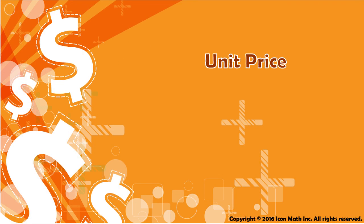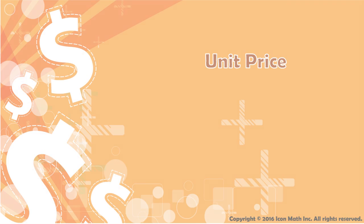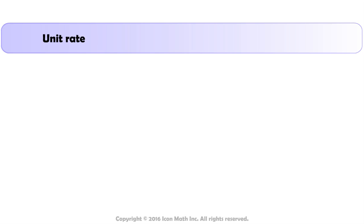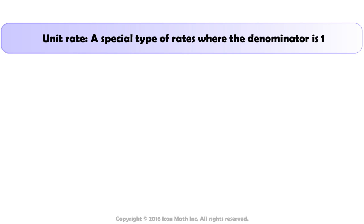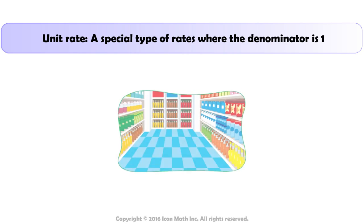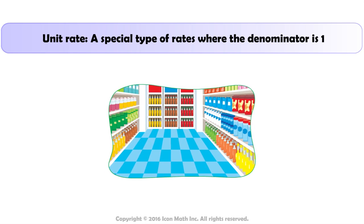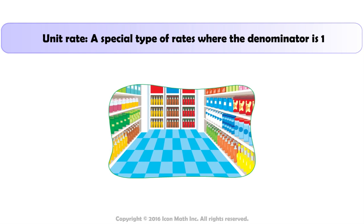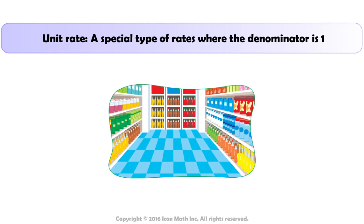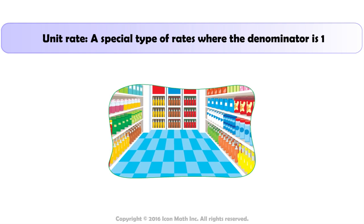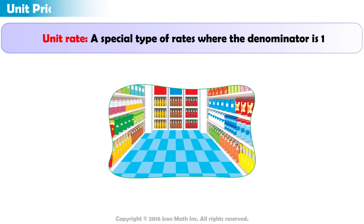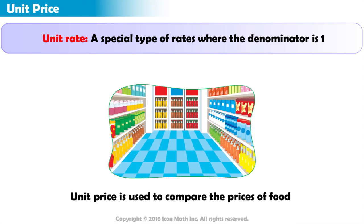Unit Price. A unit rate is a special type of rate where the denominator is 1. When comparing the prices of food at a grocery store, it is best to use the unit rate or unit price.